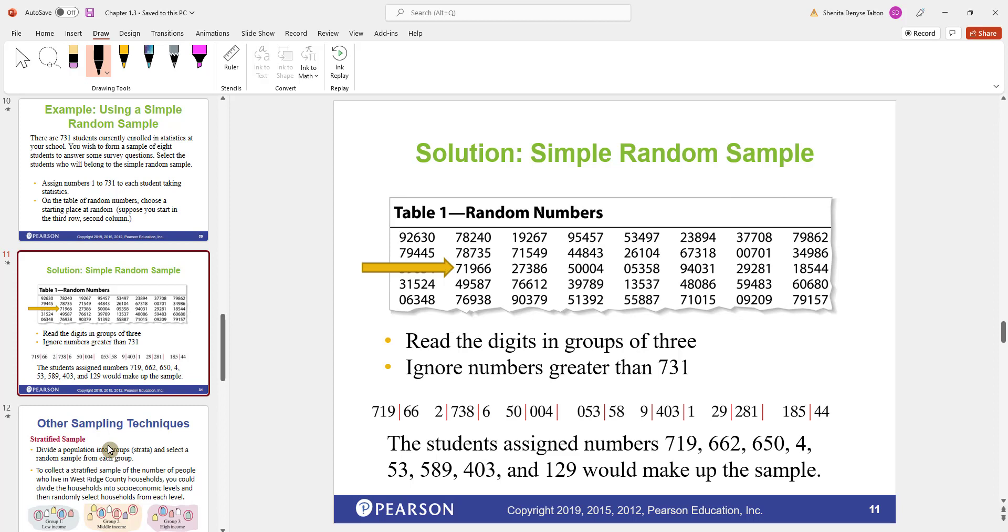Any number higher than 731 we cannot use because we don't have any students assigned to any number over 731. If we start here, we have 719. That would be our first number. Then you have 662. That's our second person. 738 we cannot use because the highest number is 731. The next one will be 650. Then we go by threes again. We have 004. We'll just call that the number 4. The next one is 053. That would be 53. The next one is 589. Then you have 403. And the last one is 129. So I have my eight people. Those are the students assigned to those numbers will be the ones that make up the sample.